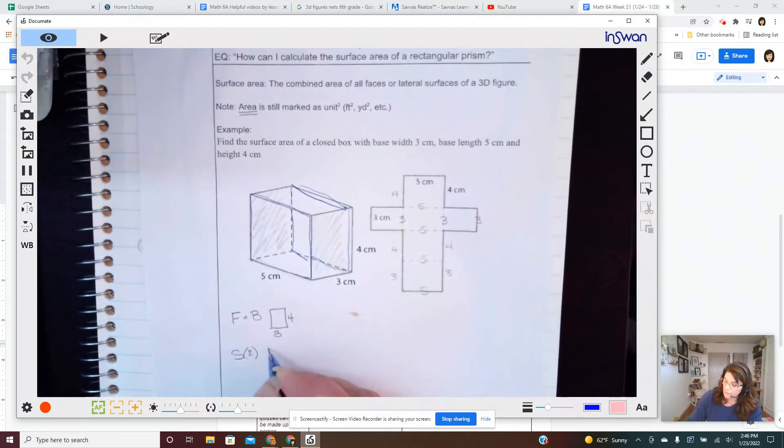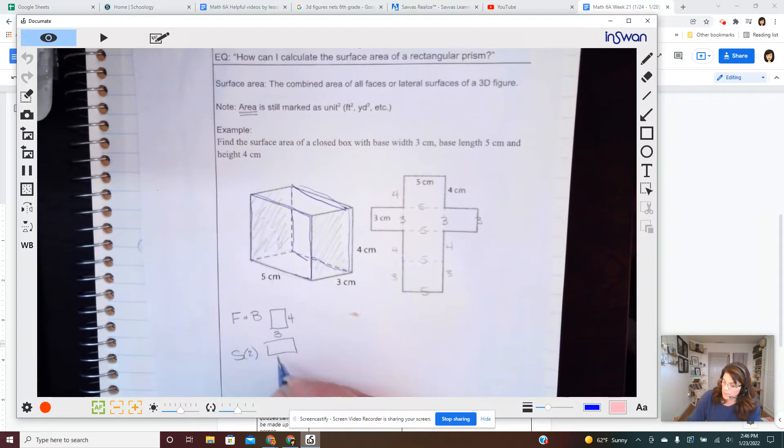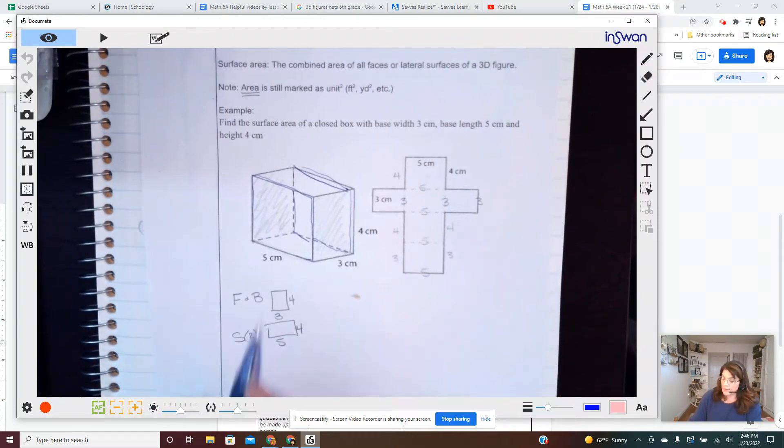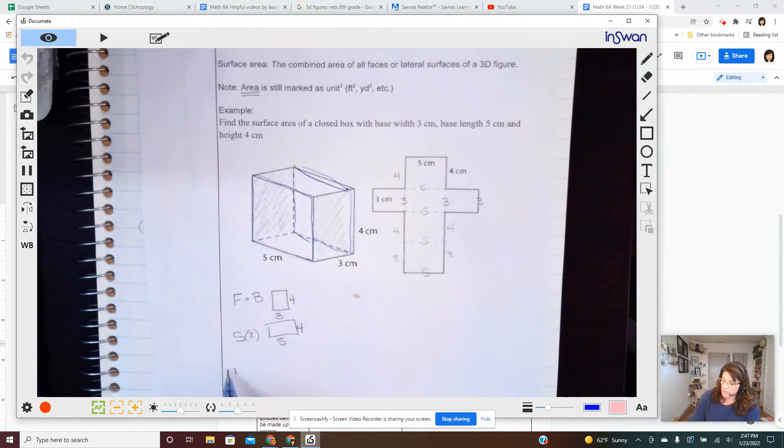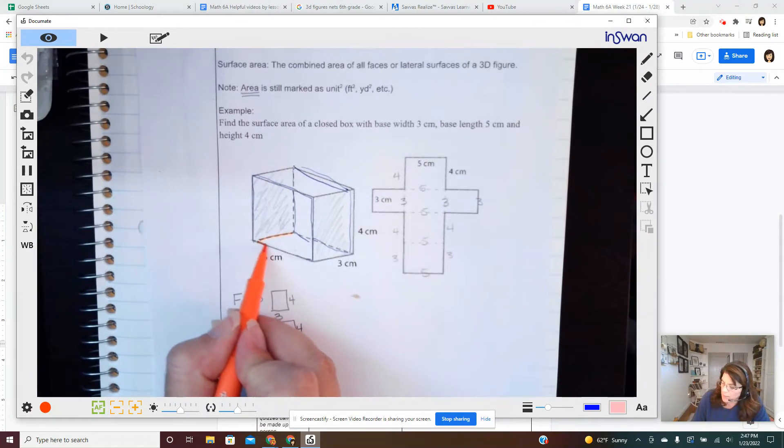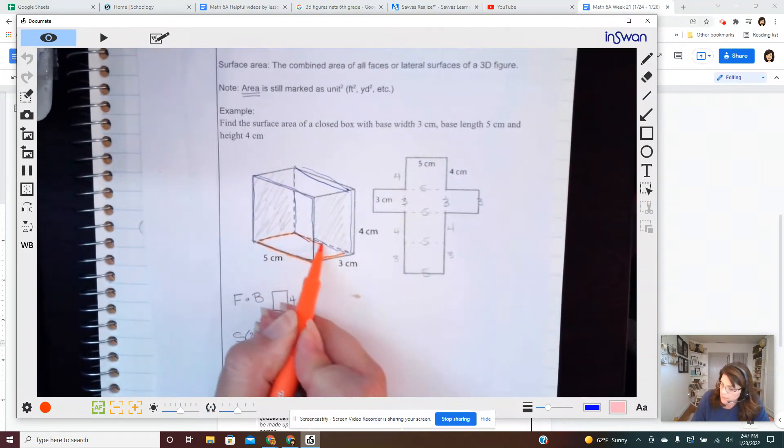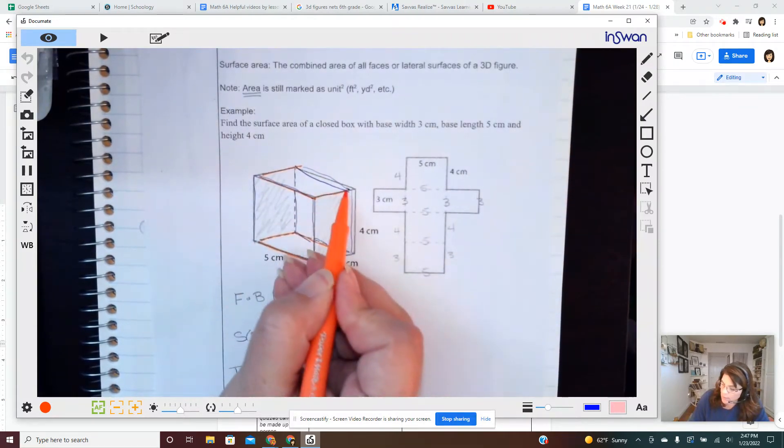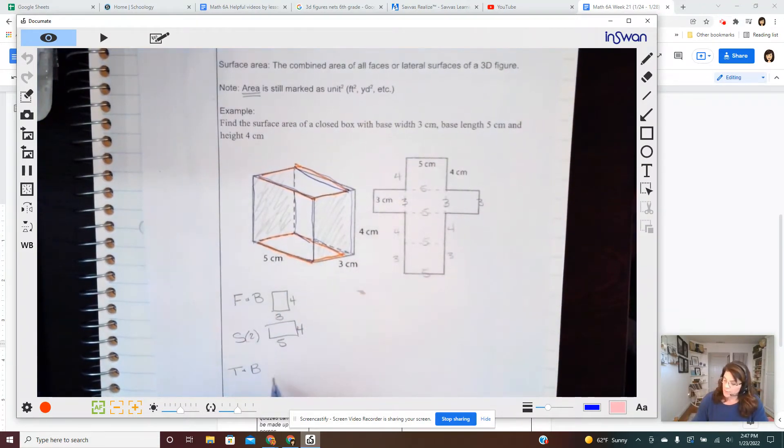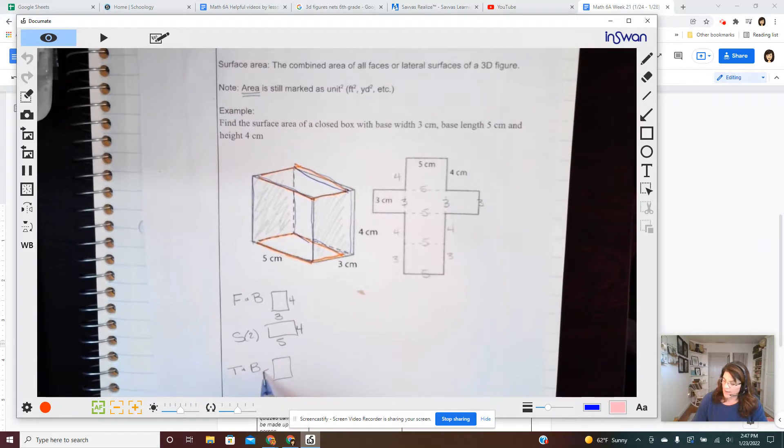And I considered those sides. There's two of them. Then that leaves the top and the bottom. Top and bottom. And if I consider the top and the bottom to be down here and up there. Then that would be five by three.